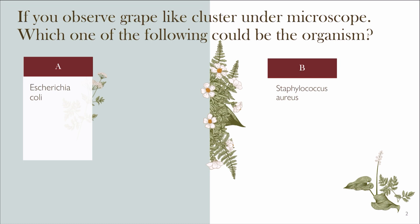The first question: if you observe a grape-like cluster under the microscope, which of the following could be the microorganism? Option A is Escherichia coli, Option B is Staphylococcus aureus.